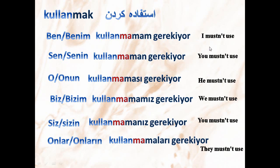By the way, this construction does not have exact differences like mustn't and shouldn't in English — such as one being stronger obligation than the other. The degree of obligation depends on the situation and how you emphasize your sentences. For both meanings of 'shouldn't' and 'mustn't', you just fix the degree in your intonation.